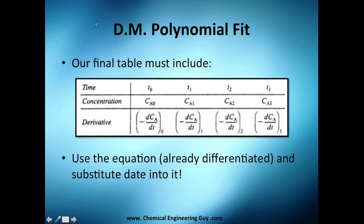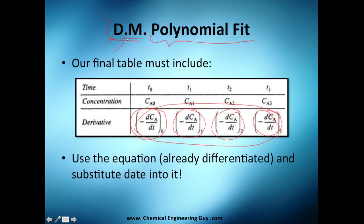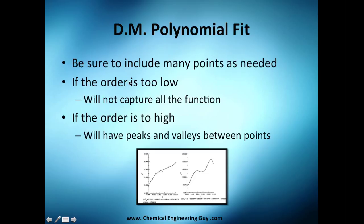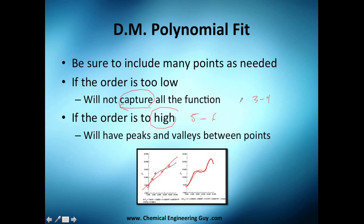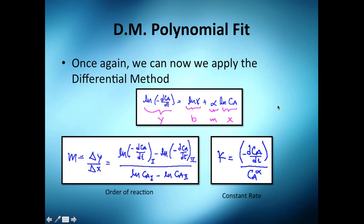The key thing to understand is that the polynomial fit only gives you the derivative part of the differential method — it's the start, not the whole method. We use the polynomial fit to get the derivative values, and then we continue with the differential method. Be sure to include as many data points as possible. If you use too high a polynomial order you risk overfitting, but using only a straight line means you lose important data. Something around order two, three, or four is generally reasonable.